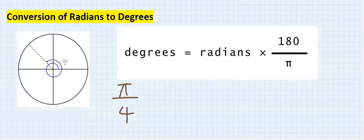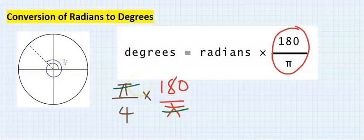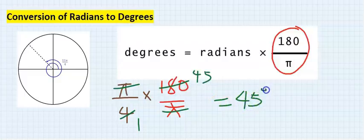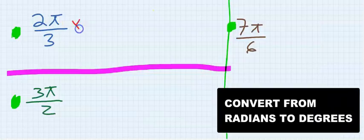To convert radians to degrees is straightforward: just multiply the given radian by 180 over π. For example, given π over 4, to convert to degrees I will multiply by 180 over π. The π cancels, four here is one, four here is 45, and my answer is 45 degrees.